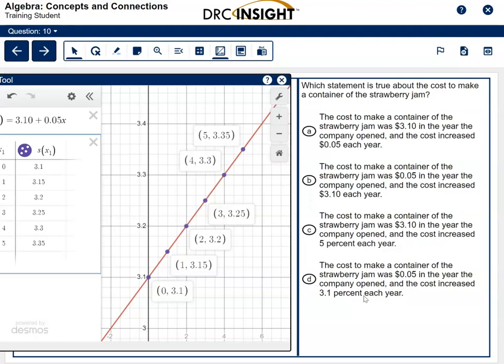The cost to make a container, wait a minute, the company opened and the cost increased $0.05 per year. Let's see, I think it might have. It went from $3.10 to $3.15 to $3.20 to $3.25. So I'm thinking this one's right. I'm going to go ahead and check it, but let's look at the others to make sure I didn't miss anything.